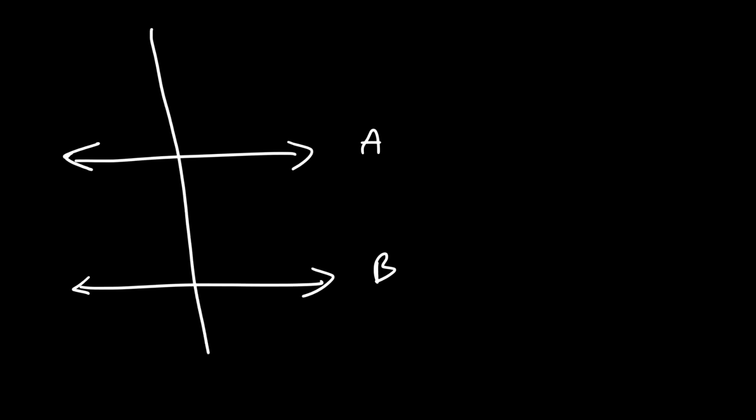Another line you need to be familiar with is a transversal. If you have two parallel lines, which we'll call AB, and they're cut by a third line T, then T is the transversal because it intersects two parallel lines. As a result, interesting things happen: angles 1 and 2 are alternate interior angles — they exist in the interior of the two parallel lines and they are congruent.